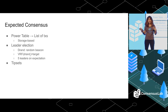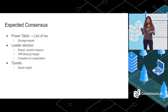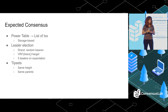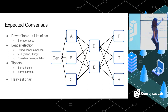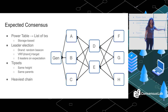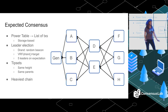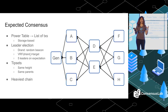Unlike longest-chain consensus protocols, in EC we consider tip sets. Tip sets are a set of blocks that all have the same height — so they were all created in the same round — and they also have the same parents. So if you think about ABC, that's one tip set; DNE is another tip set; FGH is another tip set. Instead of having one block per epoch, we have one tip set per epoch.